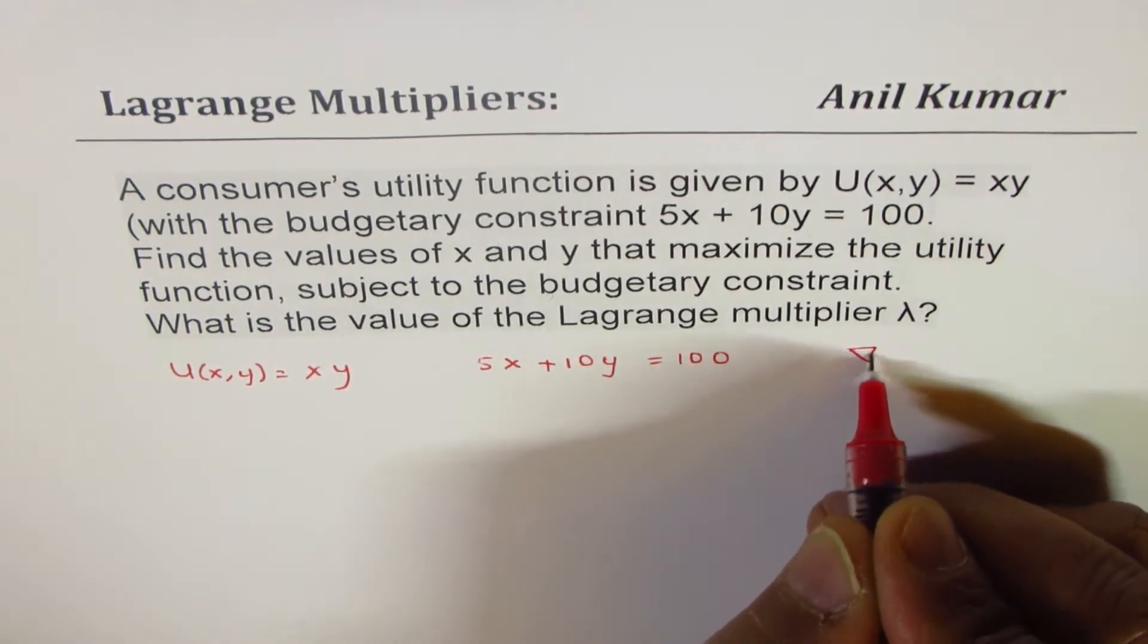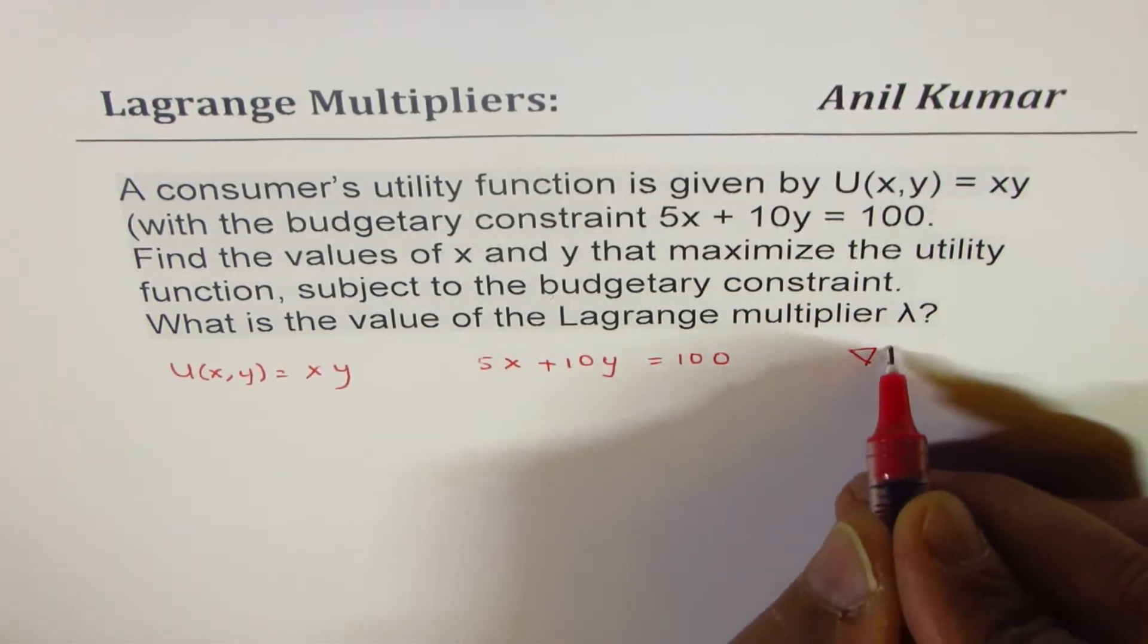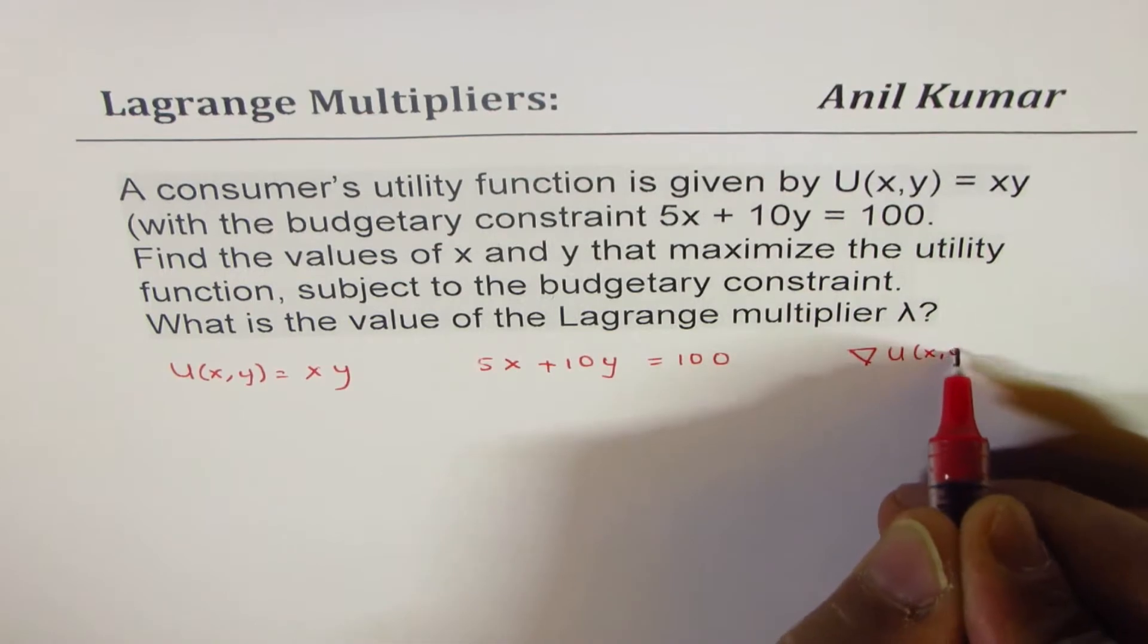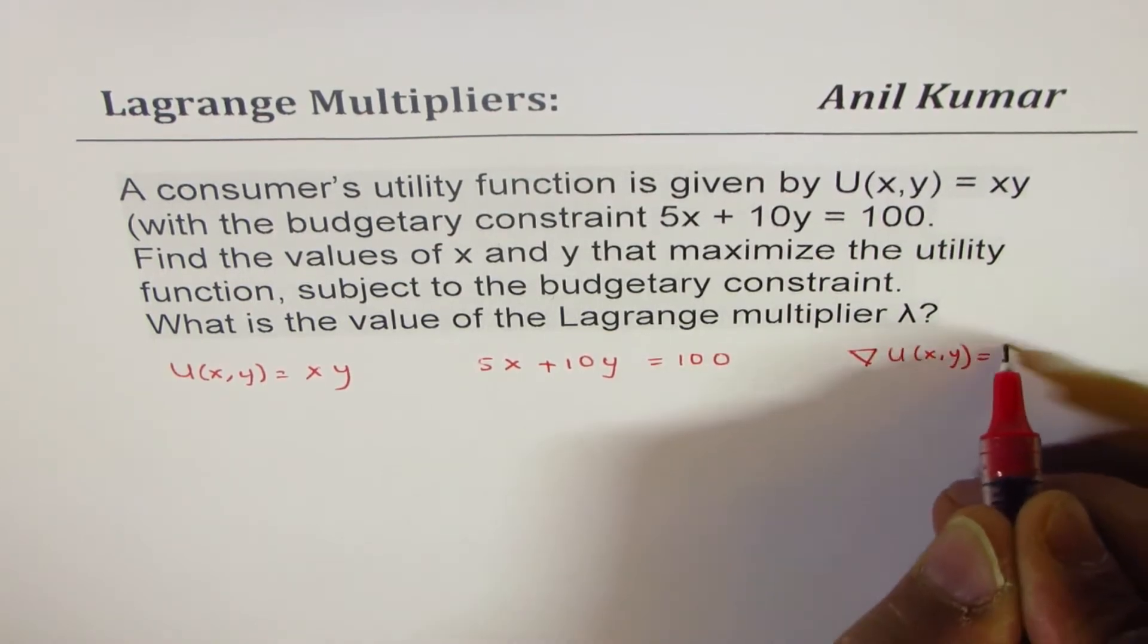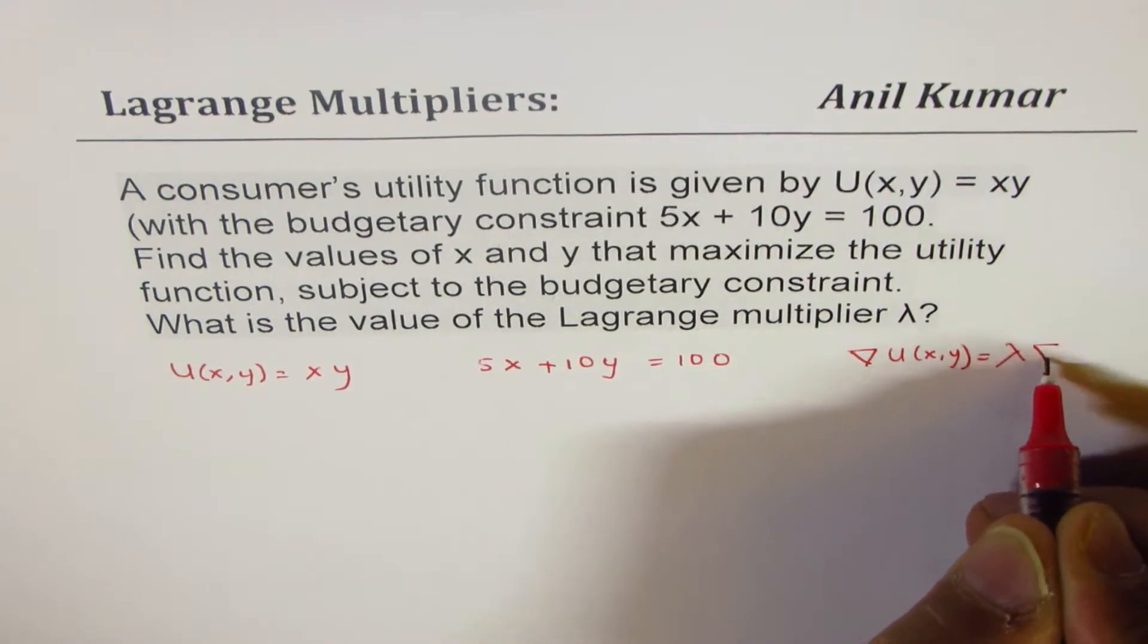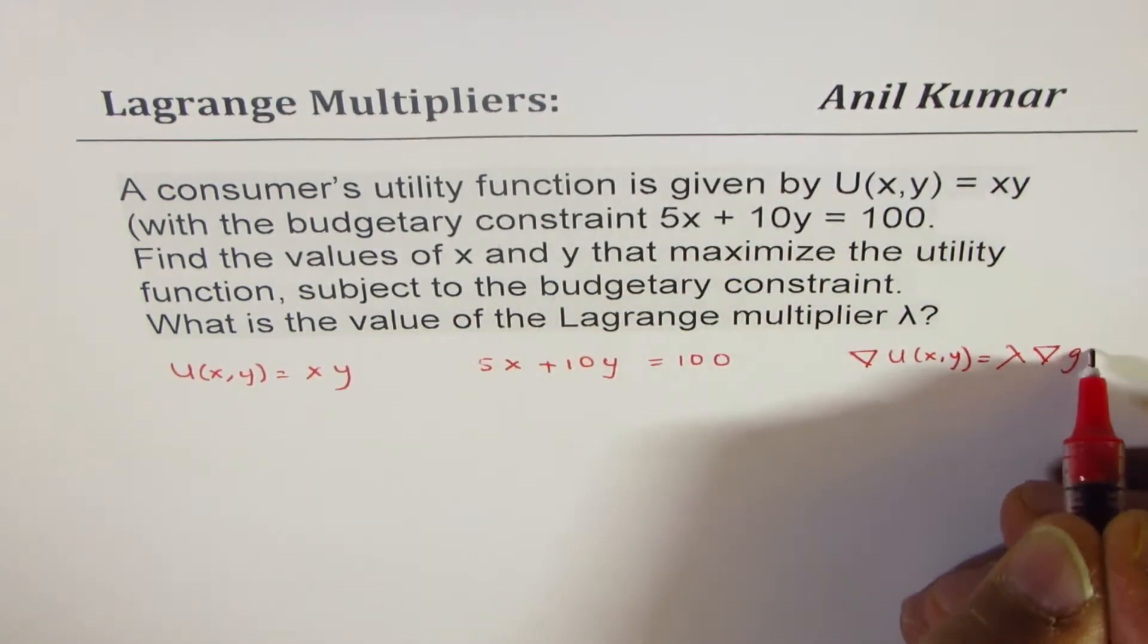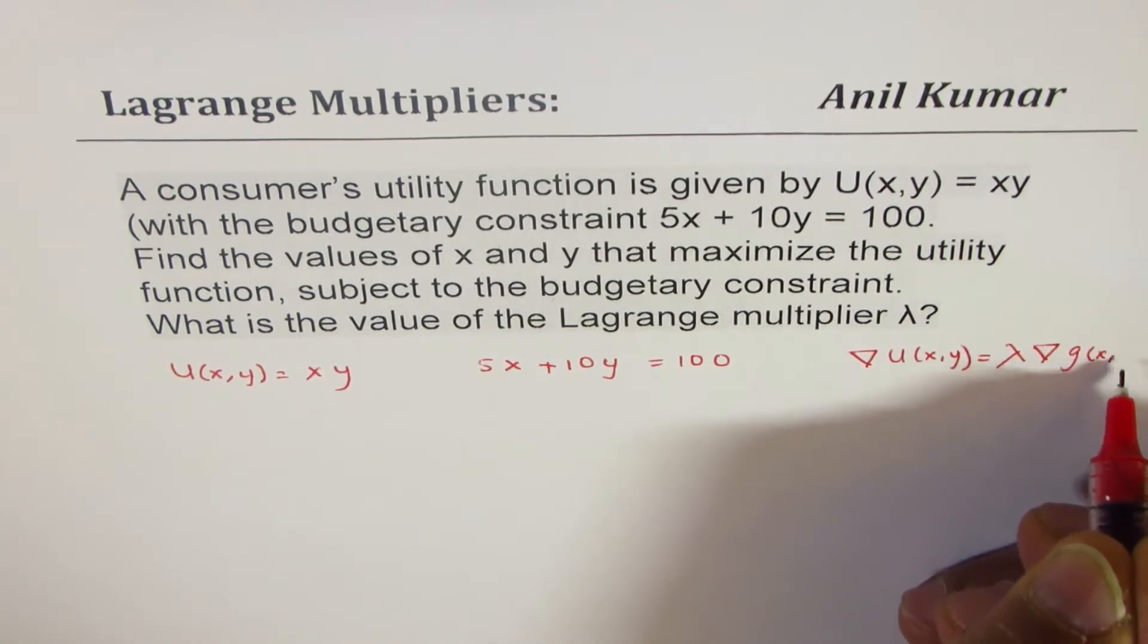That is, the gradient for the utility function, which is U(x,y), should be equal to Lagrange's multiplier times the gradient for the constraint function. Let me write this as g of xy.